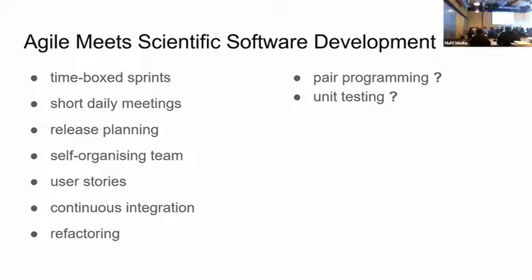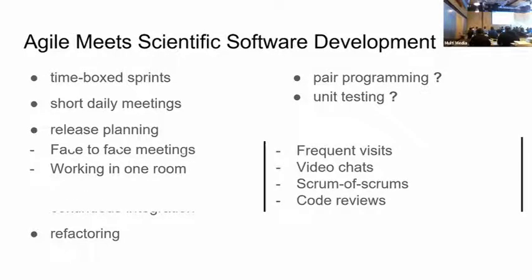Looking at agile and scientific software development — I was doing some reading in this area. On the left-hand side, with a big green tick next to each, there's evidence these practices are being used successfully in scientific software development. On the other side, though, a little less so. Pair programming and unit testing, for instance, are not as well understood in this area.